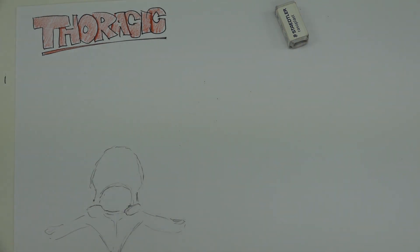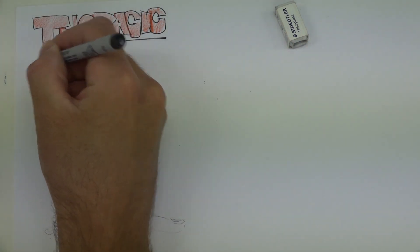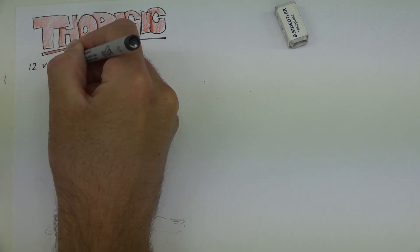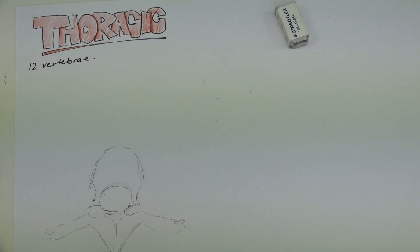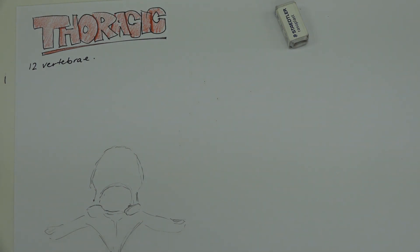Welcome back to the next part on the vertebral column. Now we're going to talk about our thoracic vertebrae. In our thoracic region, which is our chest region, we have 12 vertebrae. Those 12 thoracic vertebrae articulate with 12 pairs of ribs and the sternum to make up our thoracic cage.